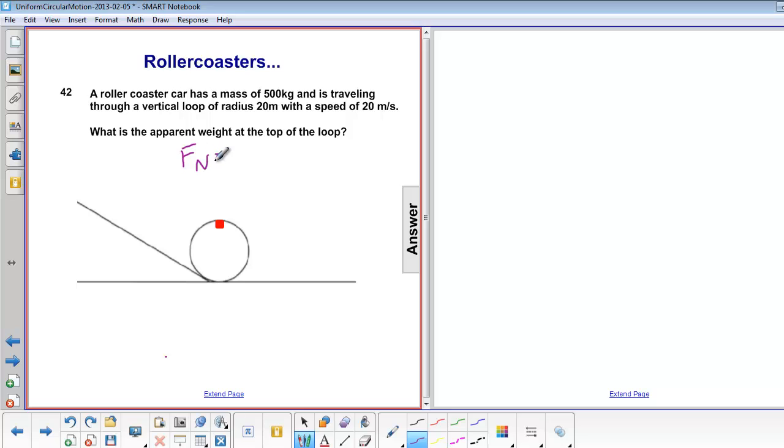We are looking for normal force. So the free body diagram, we have mg down and we also have normal force down. And acceleration is also down since acceleration is towards the center of our circle.